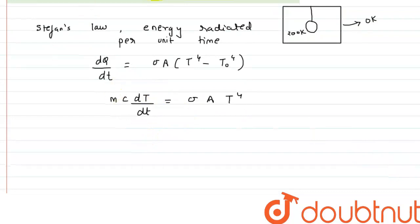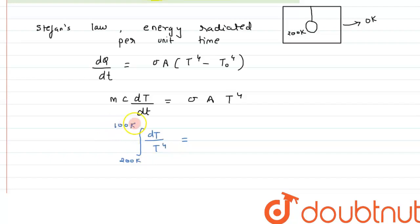Now we can separate the variables and get the desired result. After separating variables, we can write dT/T⁴ and integrate it from when the temperature initially was at 200 kelvin. We have to check the time at 100 kelvin, so when temperature reaches 100 kelvin...